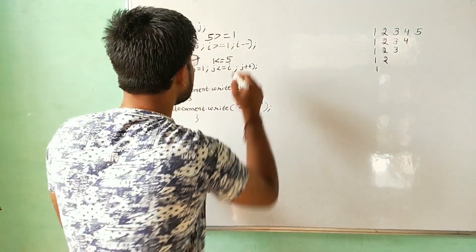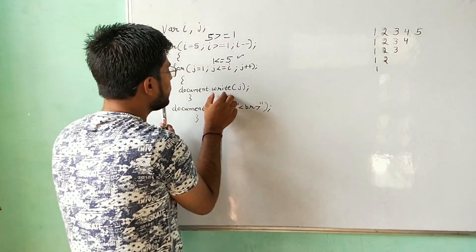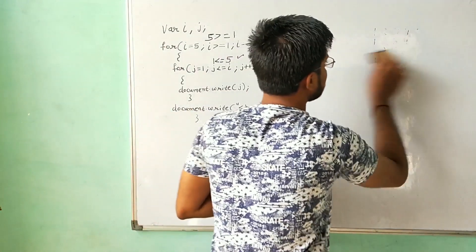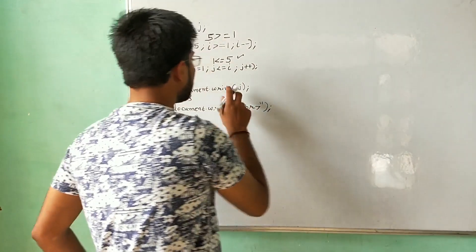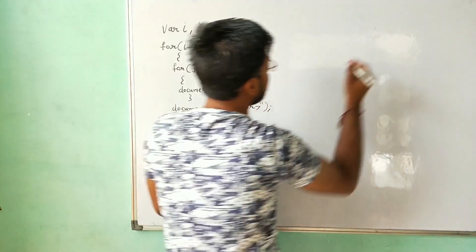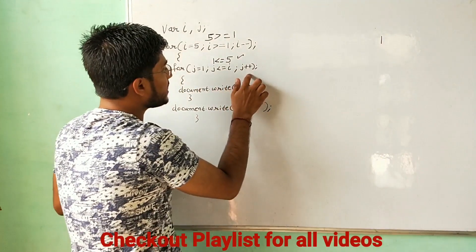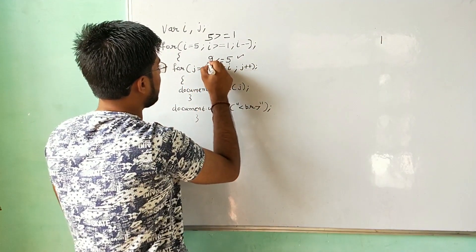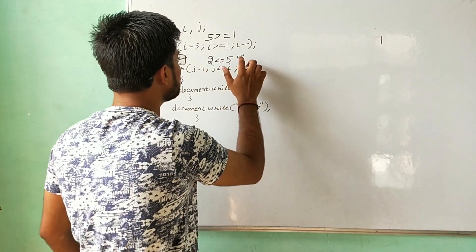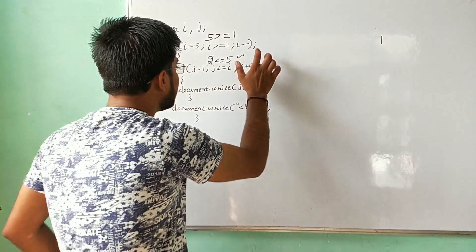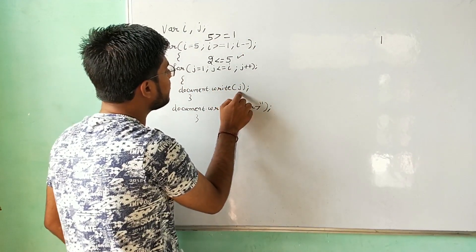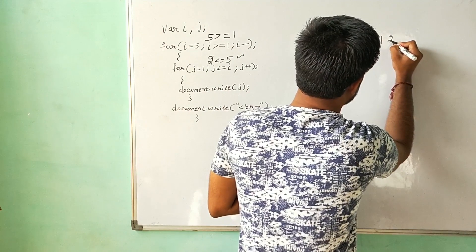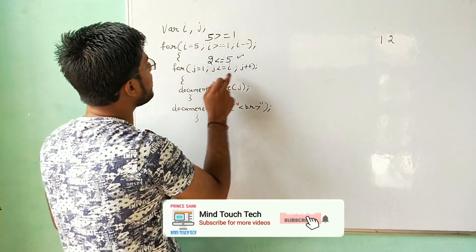If the condition is true, it will execute the document.write statement and print the j value. J value is one, so it will print one here. After that, j plus plus — we increment the value of j, so now j is two. Then it will again check the condition: is two less than or equals to five? Yes, the condition is true. The statement will execute and print the value of j, which is two.